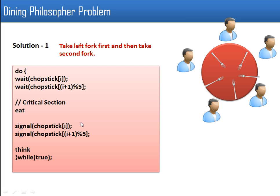Here we will see the first solution. We are taking five semaphores — every fork is represented by a semaphore. In the solution, every philosopher will first try to occupy his left fork, and once the left fork is occupied he will try to occupy his right fork. There will be a while loop for every fork. We are representing the forks as chopsticks, so we have five semaphores: chopstick 0, chopstick 1, chopstick 2, chopstick 3, and chopstick 4.